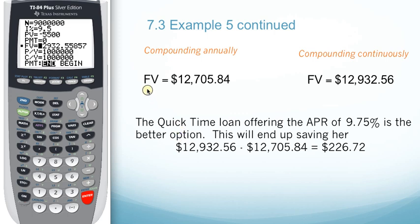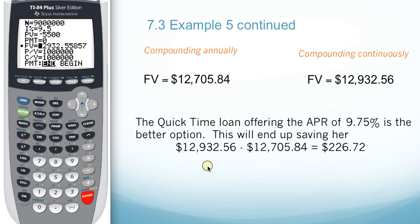Looking at a comparison between compounding annually and compounding continuously, we get a future value of $12,705.84 for compounding annually and a future value of $12,932.56 for compounding continuously. Therefore, the QuickTime Loan offering the APR of 9.75% compounded annually is a better option. This will end up saving her approximately $226.72 in interest over the course of the loan.